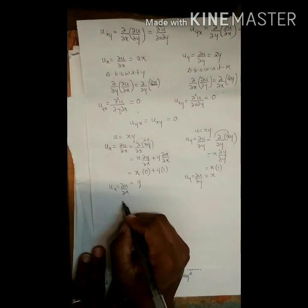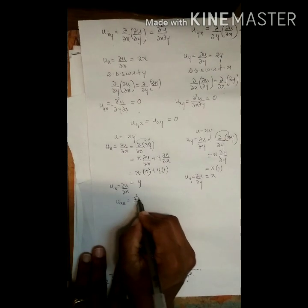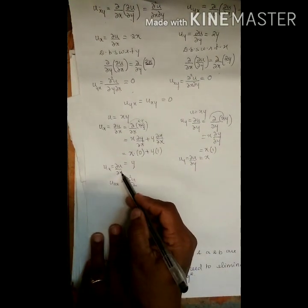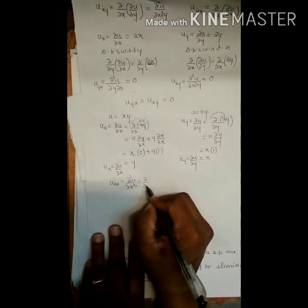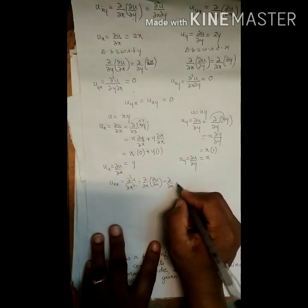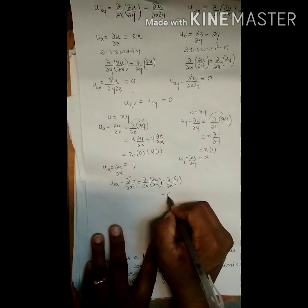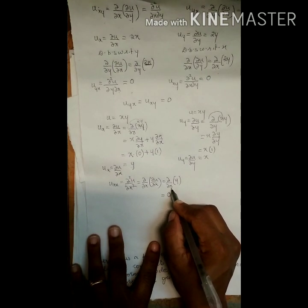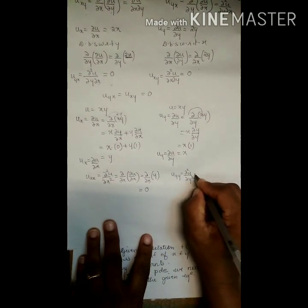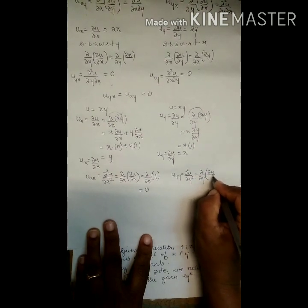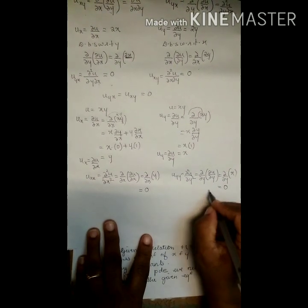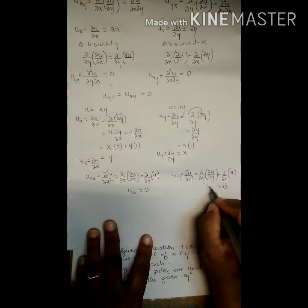Now differentiating u_x = y again with respect to x gives u_xx = ∂²u/∂x² = ∂/∂x(∂u/∂x) = ∂/∂x of y. Since y is constant with respect to x, the answer is 0. Similarly, u_yy = ∂²u/∂y² = ∂/∂y(∂u/∂y) = ∂/∂y of x. Since x is constant with respect to y, the answer is 0. So both u_xx = 0 and u_yy = 0.